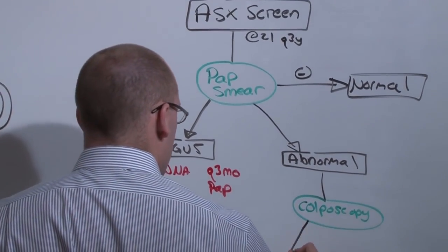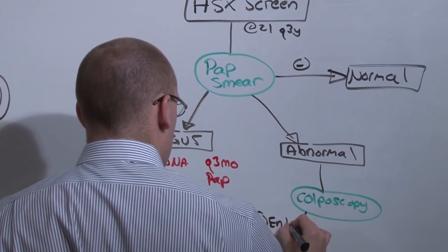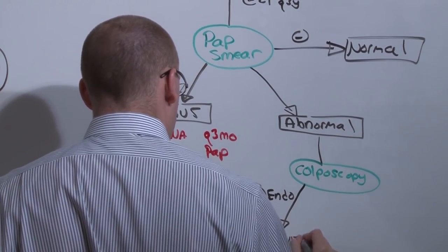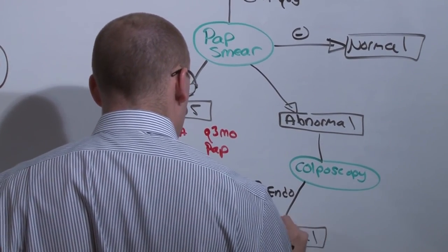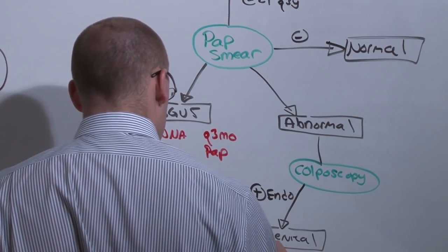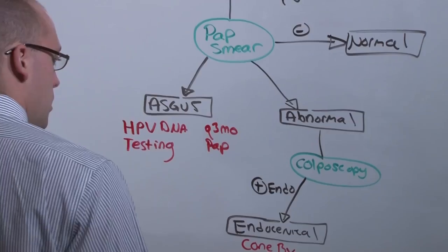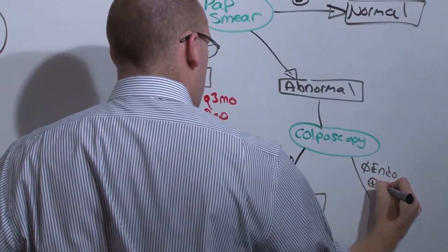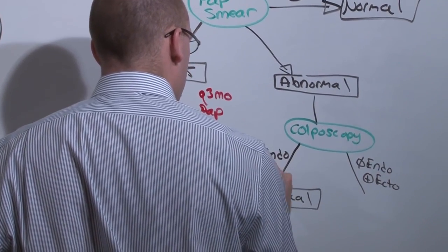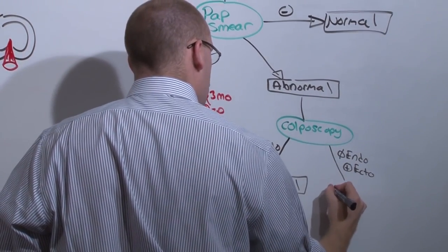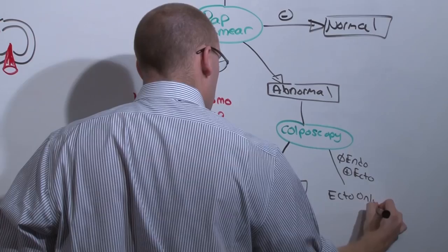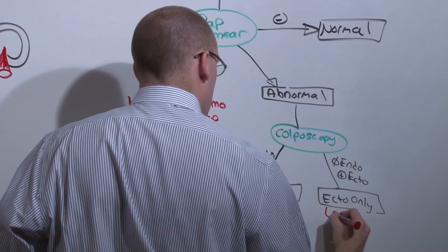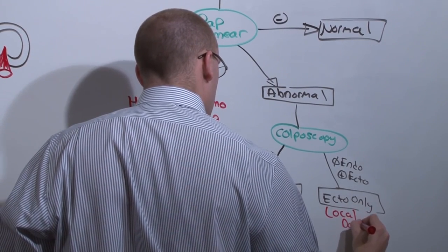If ever there is a positive endocervix, you have an endocervical lesion, and you need a cone biopsy. If there is no endocervical lesion, but there is an ectocervical lesion, you have ecto only, and you can perform local destruction with LEEP or cryo.